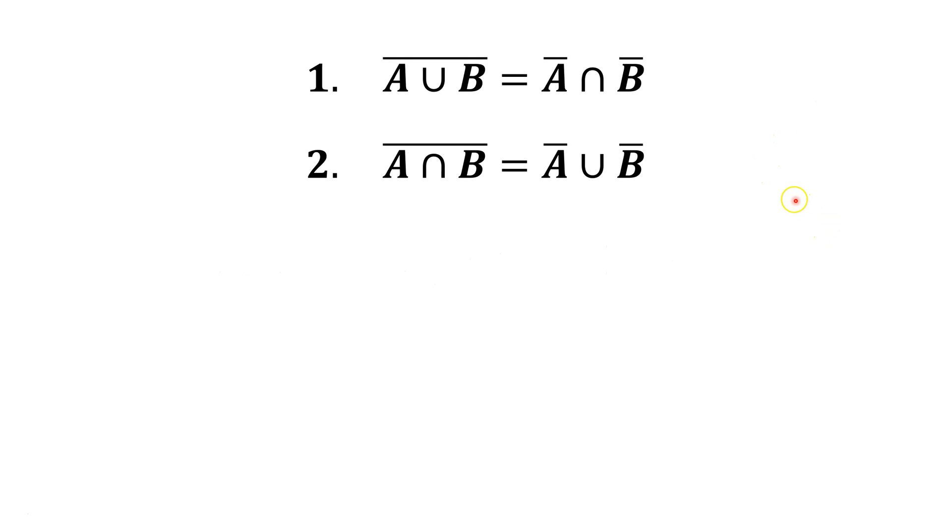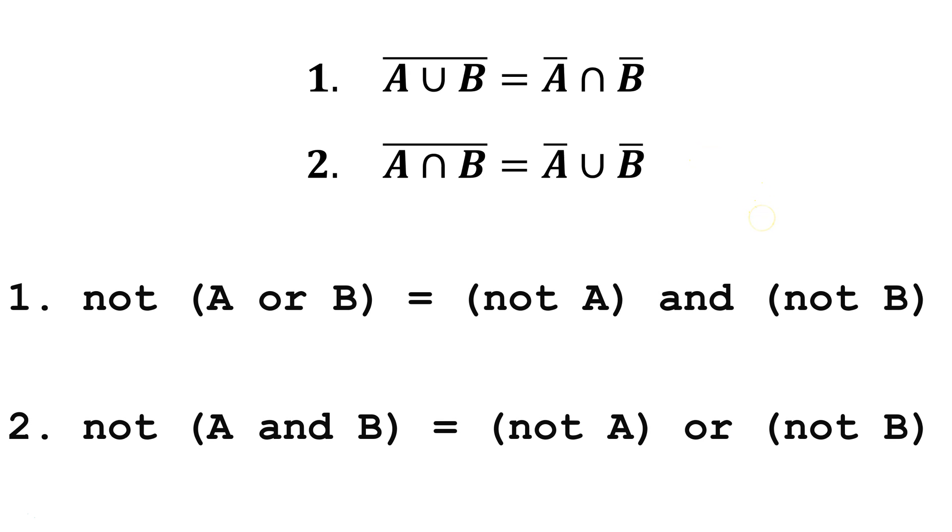If we were doing Boolean algebra, we would probably write them like this. However, for the purpose of this video, we're going to use these English equivalents. Not A or B is equivalent to Not A and Not B. And the second one, Not A and B, is equivalent to Not A or Not B.